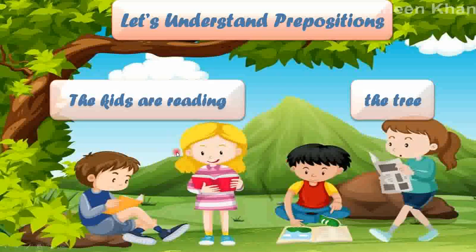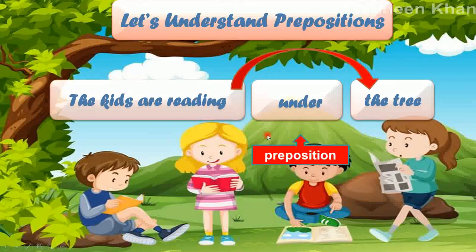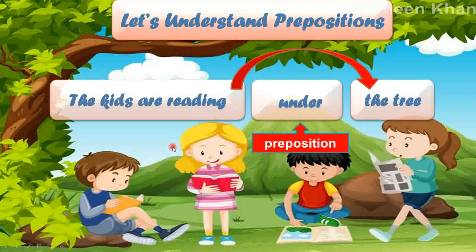Now let's find out by going through some examples to understand our prepositions better and get friendly with them. Look at this image — what do you see? You see some kids who are reading, and you also see a large tree. So the kids are reading, and the noun is the tree. Now think about how we can connect this to the tree — we need a preposition to glue them together in a sentence. What's the preposition we can use? 'Under.' The kids are reading under the tree. So 'under' is our preposition — it connects these groups of words and the noun together, making one sentence.